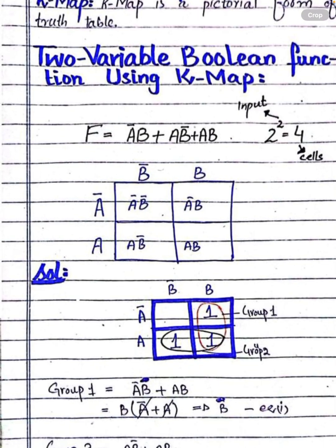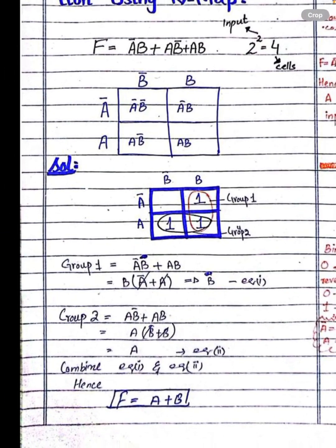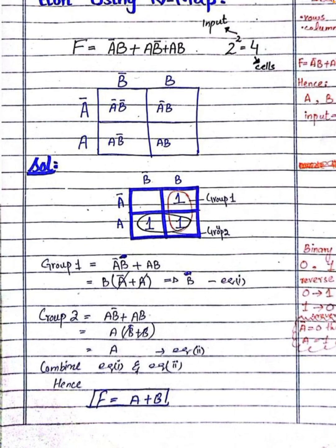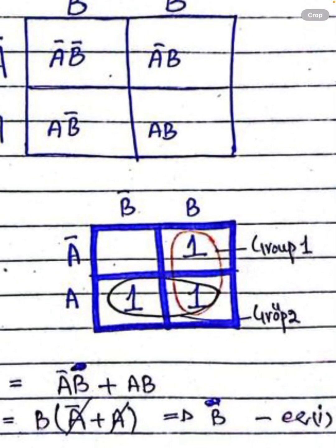Now we have to solve the question. We have to make a function. The function is equal to a-bar b-bar plus a-bar b plus ab. First, let's do our first term. Find out where a-bar b is located on our K-map. So here, a-bar b is where we place 1 on our K-map.